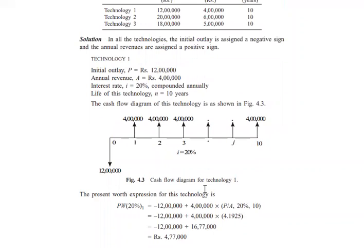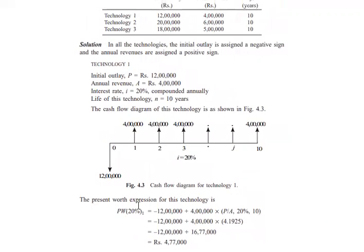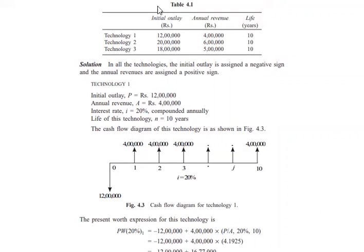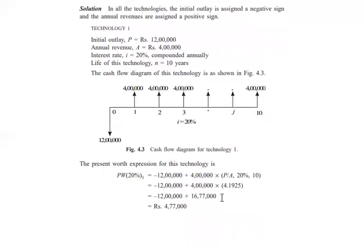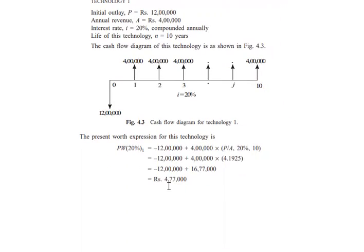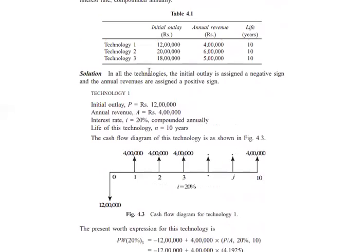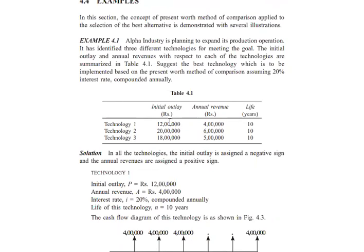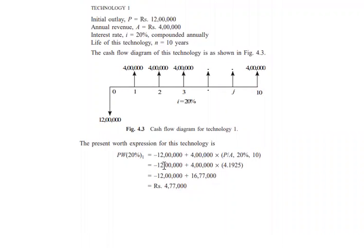Using the present worth formula, we compute: initial outlay (taken as negative, since it is an expenditure) plus annual revenue multiplied by the P/A factor at 20% for the life of the technology (10 years). The initial outlay is negative because it represents money being spent to generate profit.